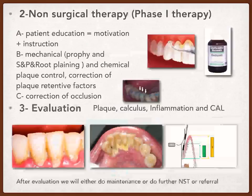Then we do the non-surgical therapy. In this phase, we eliminate dental plaque and factors that enhance its presence. We perform mechanical and chemical plaque control. Mechanical plaque control includes prophylaxis, scaling, polishing, and root planing. Chemical plaque control includes topical chemicals such as chlorhexidine mouthwash, and systemic chemicals — the most important being the tetracycline family.